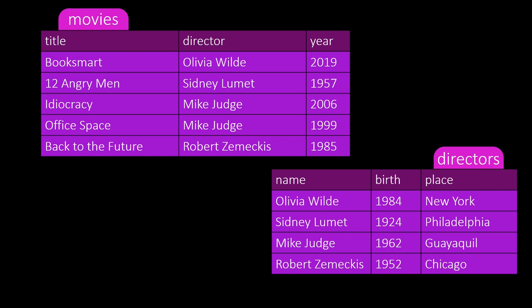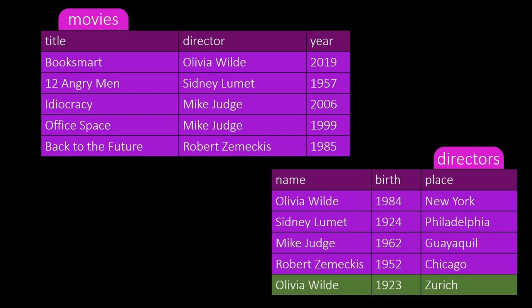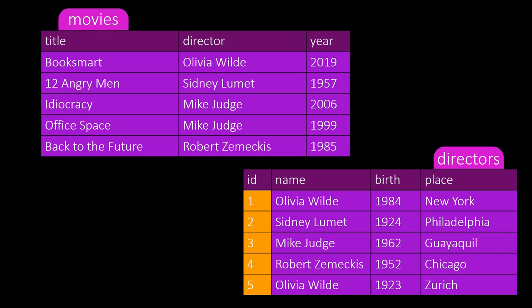But what if a director's name is not unique? We have a problem if there is a second Olivia Wilde in our director table. In the movies table, we say that Olivia Wilde directed Booksmart, but in the director's table, we have two Olivia Wildes — so which Olivia directed Booksmart? We solve this by adding an ID column to the director's table, giving each director a unique ID. The younger Olivia Wilde has ID 1, the older Olivia Wilde has ID 5.